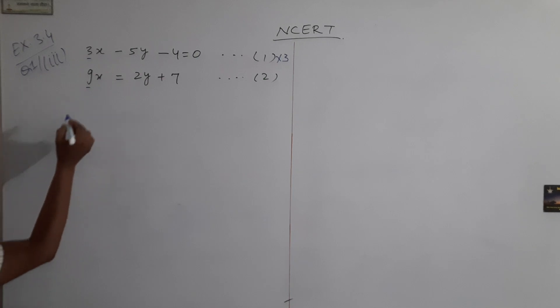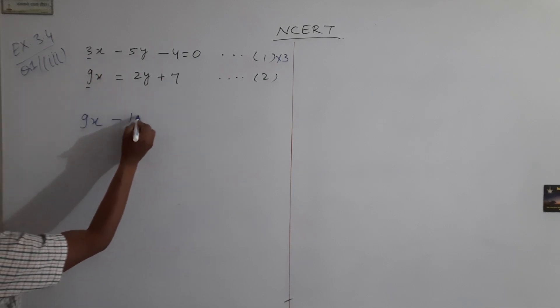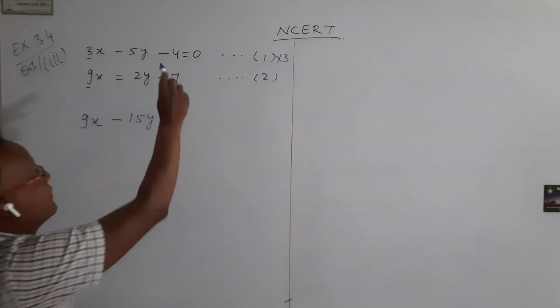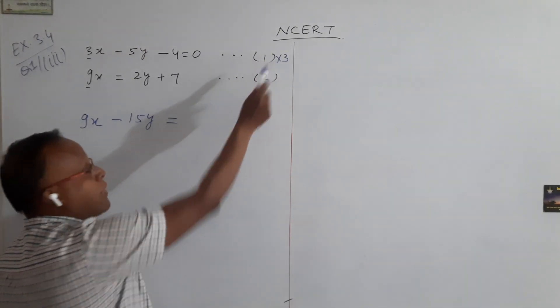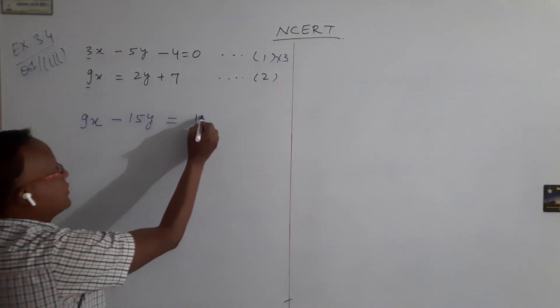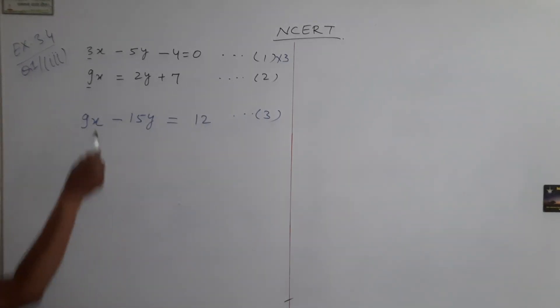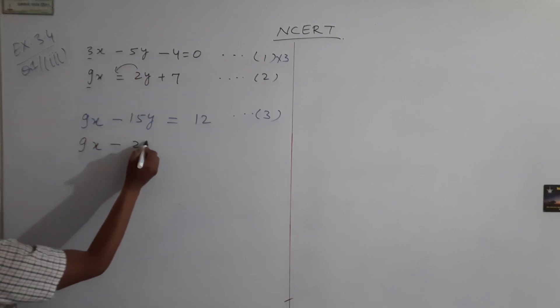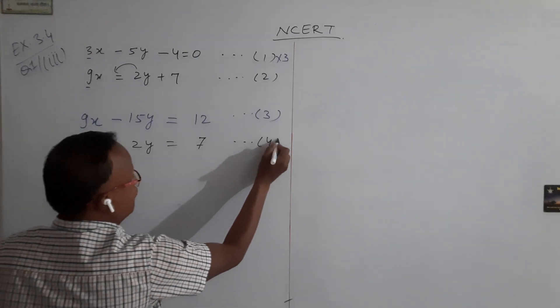So multiplying equation 1 by 3, we get 3 into 3, 9x minus 15y equal to, minus 4 when we take it on the right hand side becomes plus 4 and multiplying by 3, you get 12. So this is your equation number 3. And after rearranging equation 2, we get 9x minus 2y equal to 7. So this is equation number 4.